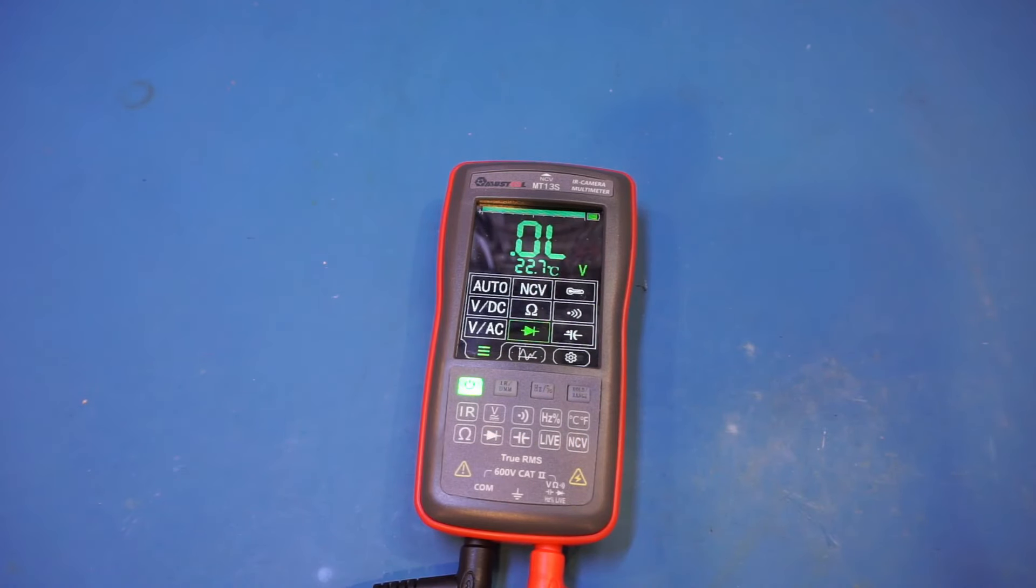Let's now take a look at the capacitance measurement mode. Now, I'm glad to see on the spec the MT-13S supports up to 99 mF. If you recall, the ET-12S only supported up to 100 uF. So the extended range definitely makes this meter more attractive.